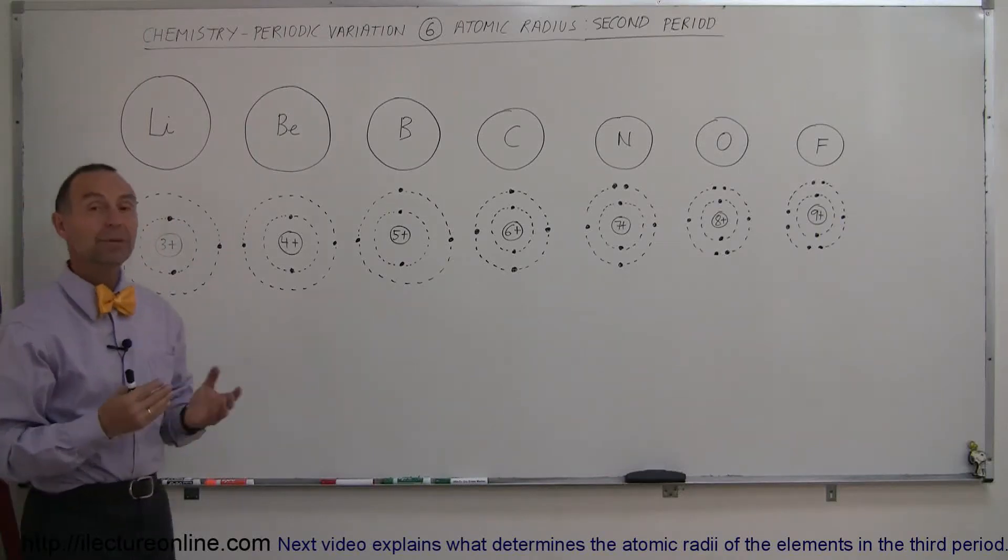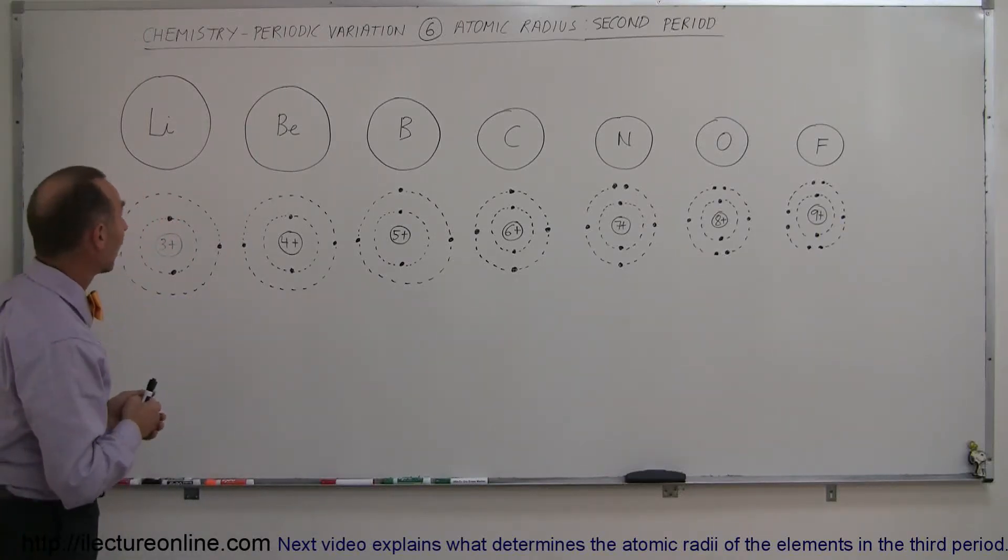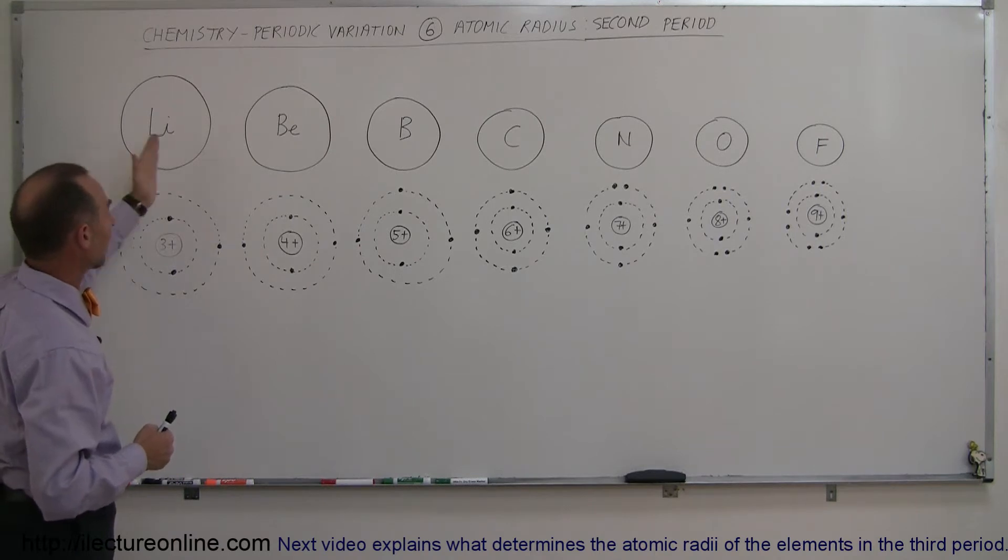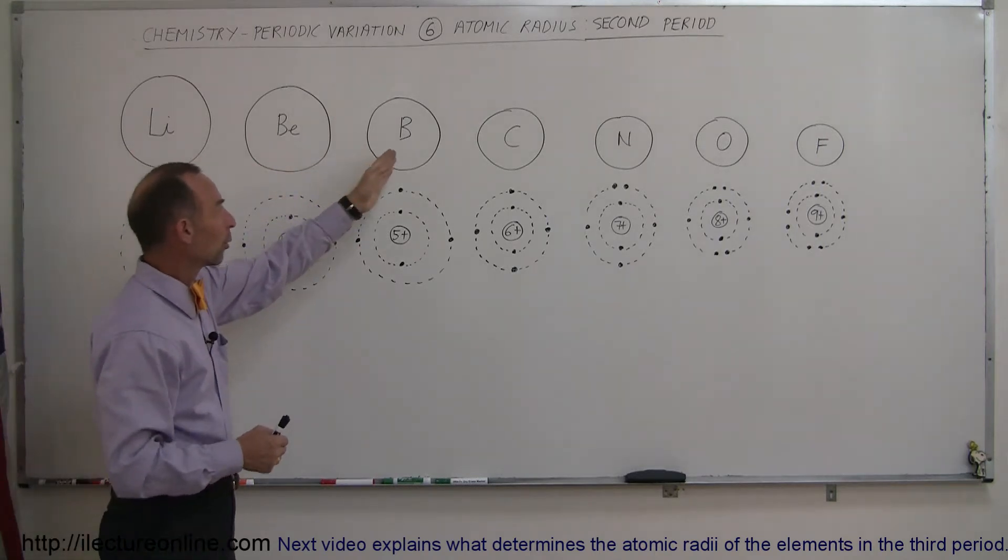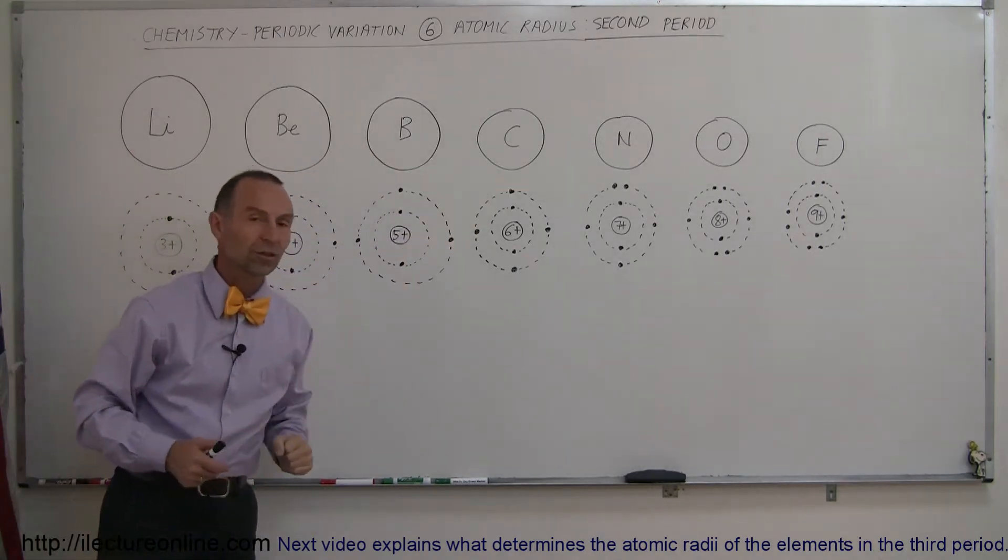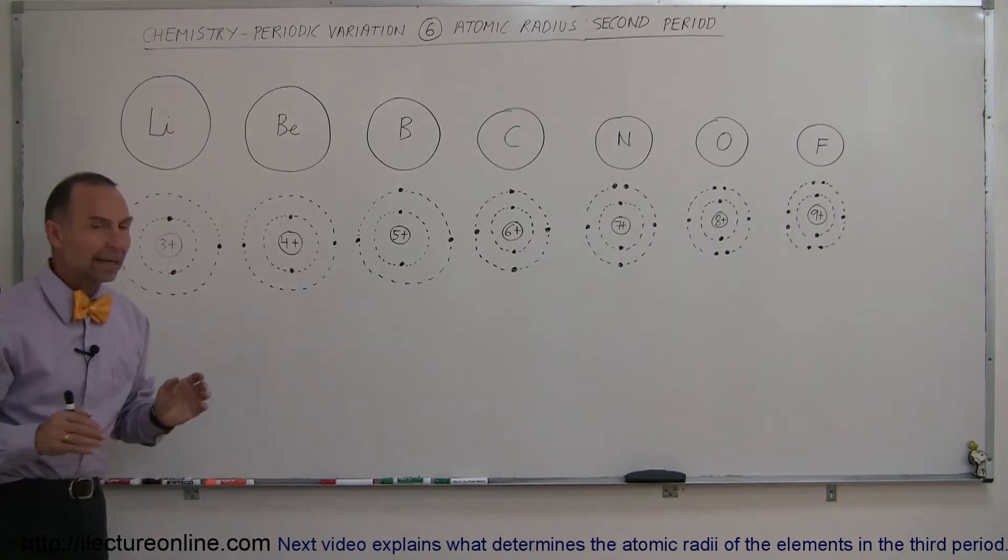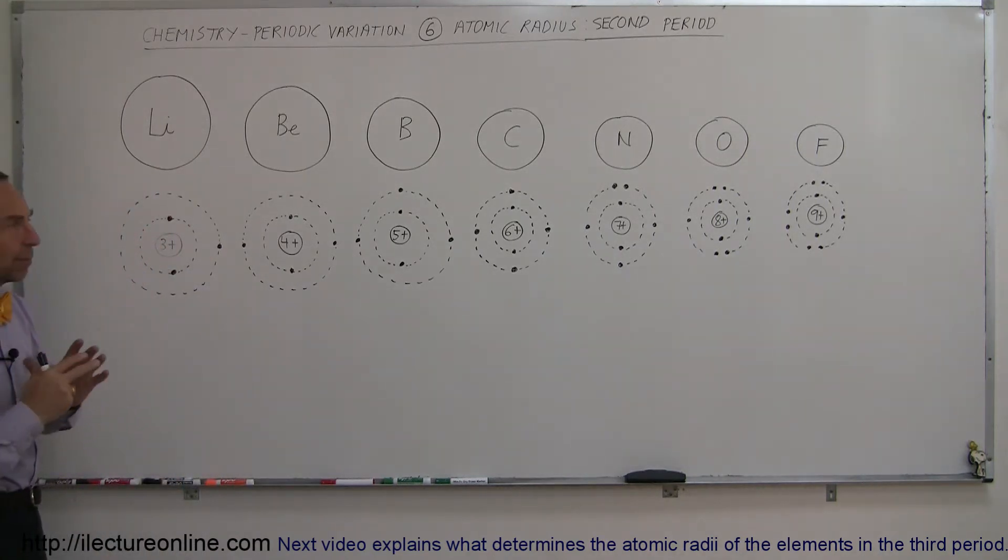Here we're taking a look at the second period in the periodic table. On the left side we start out with lithium, then we have beryllium, boron, carbon, nitrogen, oxygen, and fluorine. And trying to understand the size of the atom based upon the electron structure around the nucleus in each case.